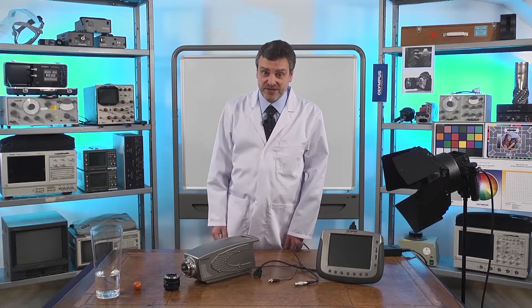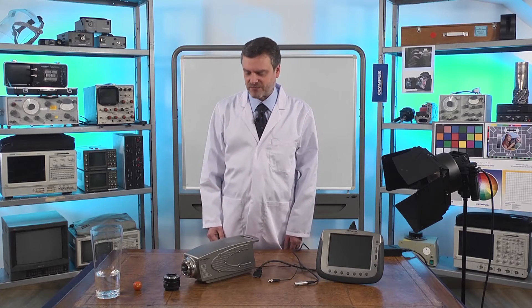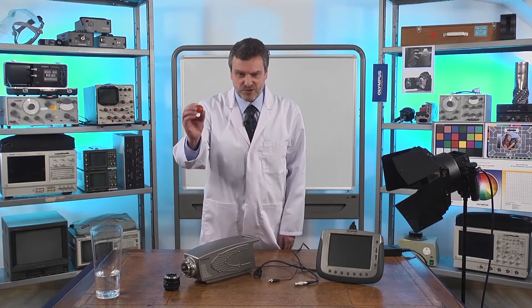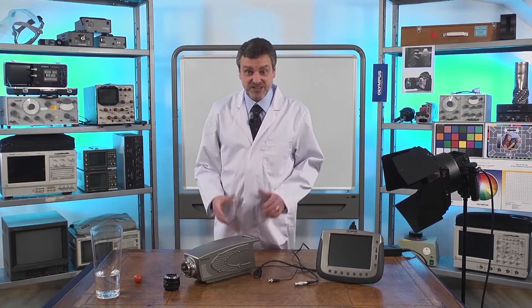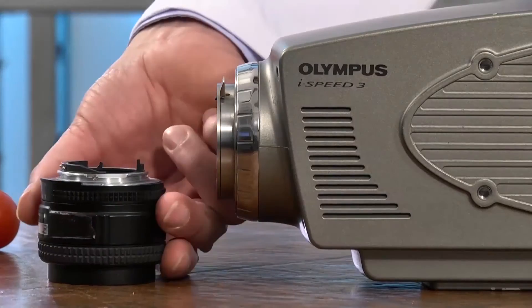I'm going to show you how to make a recording using the iSpeed 3 camera. I'm going to do that by dropping a tomato into a glass of water. First thing I have to do is connect the lens.